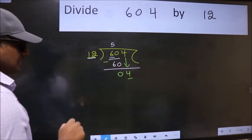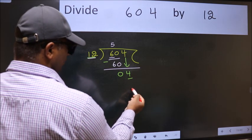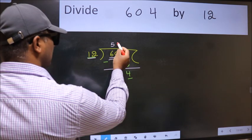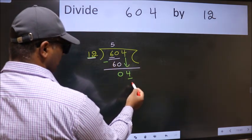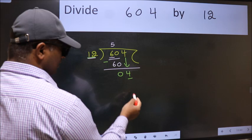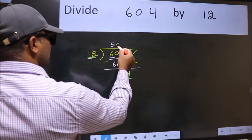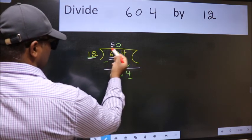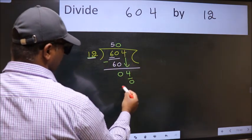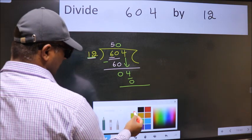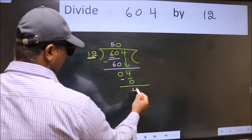what we should think of doing is which number should we take here? If I take 1, we will get 12, but 12 is larger than 4. So what we do is we take 0 here. So 12 into 0, 0. Now we subtract. We get 4.